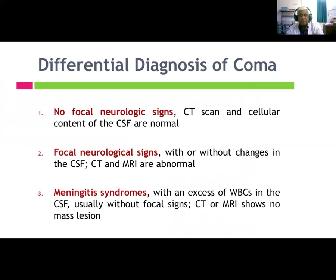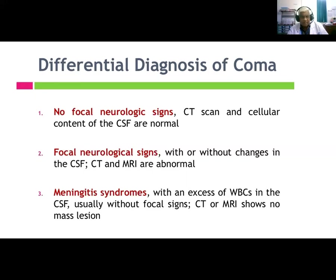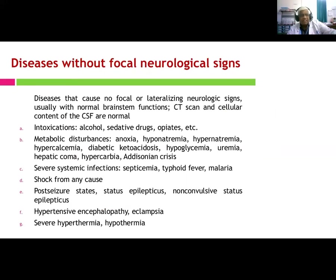The differential diagnosis of coma: with no focal neurological signs, CT scan and CSF are normal. With focal neurological signs with or without changes, CT and MRI are abnormal. Meningitic syndromes present with excess WBCs in CSF, usually without focal signs. Diseases causing coma without focal or lateralizing neurological signs and with normal CSF include intoxicants such as alcohol, sedative drugs, and opiates, and metabolic diseases.